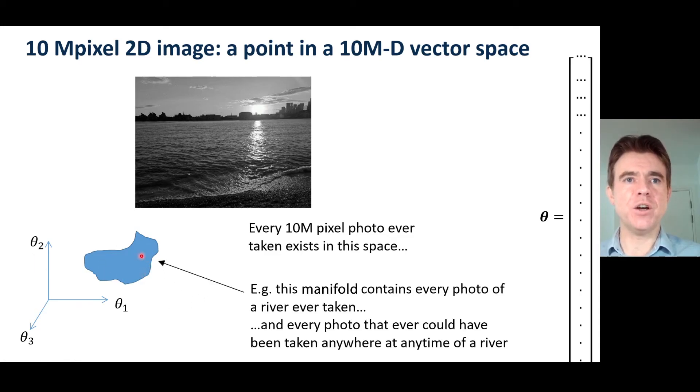This photo is a photo of the River Thames. And obviously, photos of rivers are never going to fill the entirety of this space. It has to be some kind of subspace because over here, for example, we could have photos of trees.